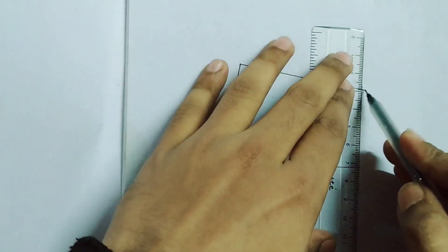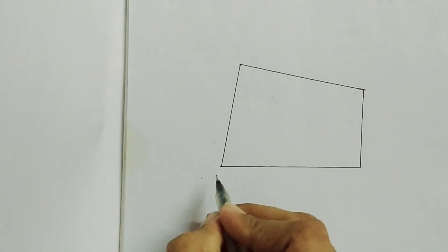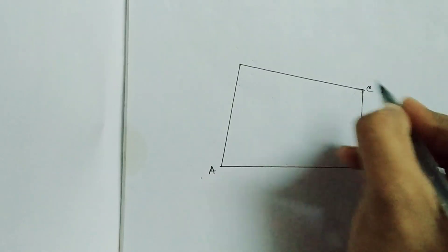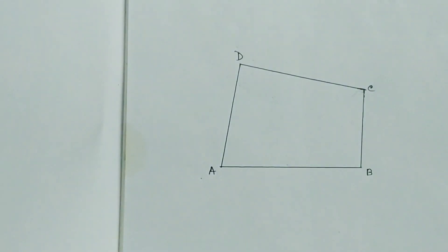Or either you can take any kind of quadrilateral. It can be special also if in the question that is given. So this is a quadrilateral. Name this one A, B, C, and D.